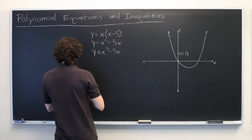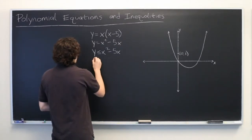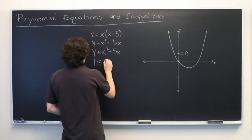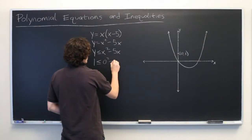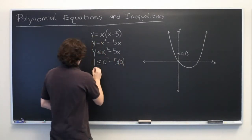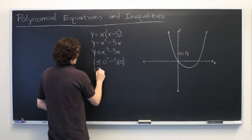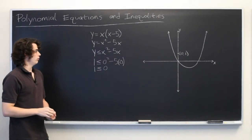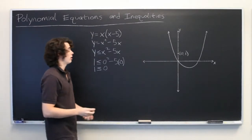Okay, so we have 1 is less than or equal to 0 squared minus 5 times 0. Or in other words, 1 is less than or equal to 0. Well, that's clearly not true. So we're going to go ahead and shade in the other side.